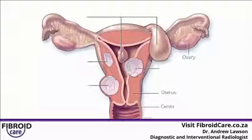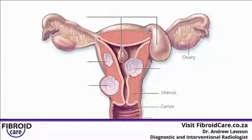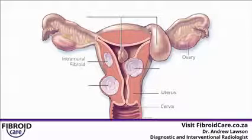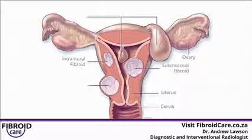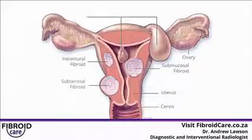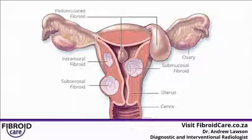There are various types of fibroids classified according to their positions. If they lie within the wall of the uterus, they are called intramural. If they protrude into the cavity of the uterus and affect the lining of the womb, they are called submucosal. If they stick on the outside of the uterus, they are called subserosal. And if they are actually stuck on a little stalk, they are called pedunculated.